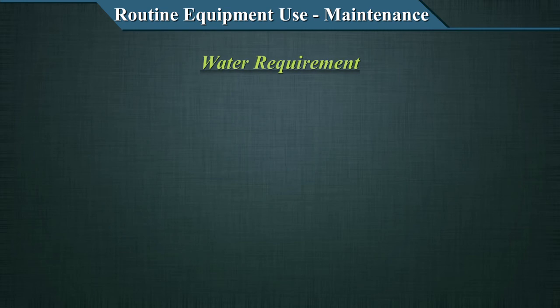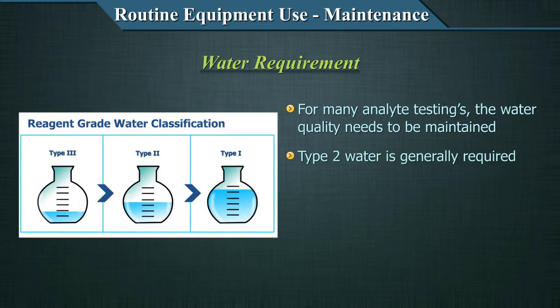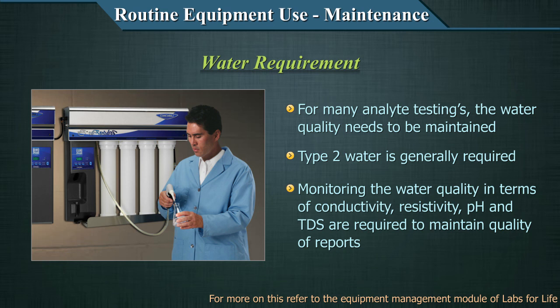Another important utility in the laboratory is water quality. Many analyte tests require water quality to be maintained — generally Type 2 water. Monitoring of water quality in terms of conductivity, resistivity, pH, and TDS (total dissolved solids) is required to maintain quality of reports for many biochemical analytes. For more on this, please refer to the equipment management module of Labs for Life.